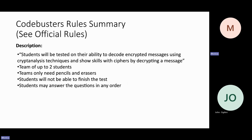The rules are pretty straightforward. Students are tested on their ability to decode encrypted messages. You can have up to two students on a team. The only thing they need to bring are pencils and erasers. Students will not be able to finish the test — it is written so that it cannot be finished. The reason for that is we want students to have choices in what ciphers to work on. Students may answer questions in any order. At invitationals and regionals, the test will be in a folder, single-sided and not stapled, so they can work in any order.